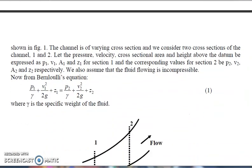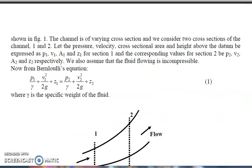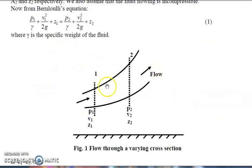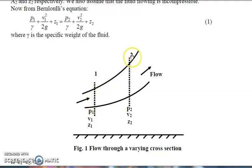Here we have to see this formula. If this is a diagram where this is the channel through which a flow of liquid is going on — this is cross section A at the channel and this is cross section 2. P1 is the pressure, V1 is the velocity, and Z1 is the height at cross section 1. P2, V2, and Z2 are the values at cross section 2.